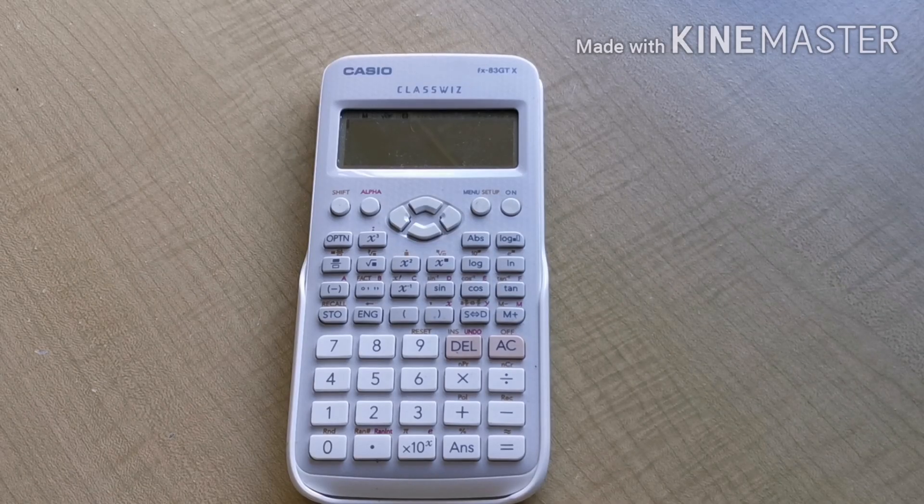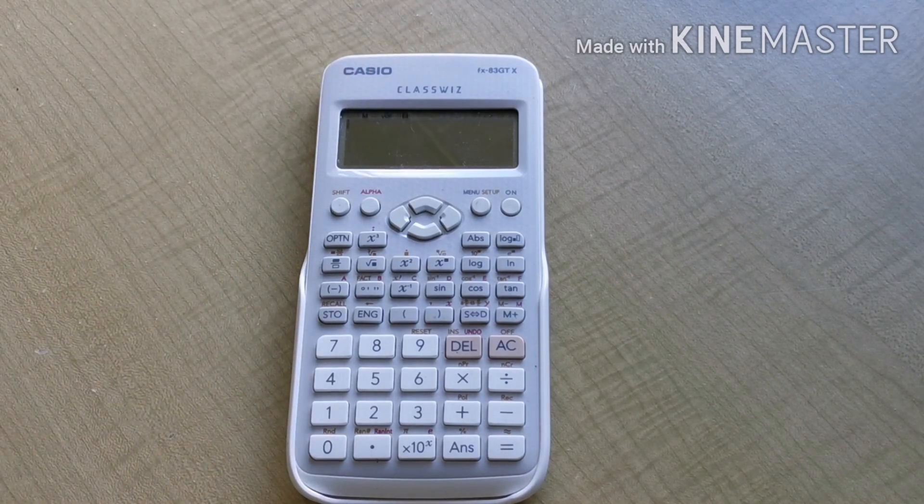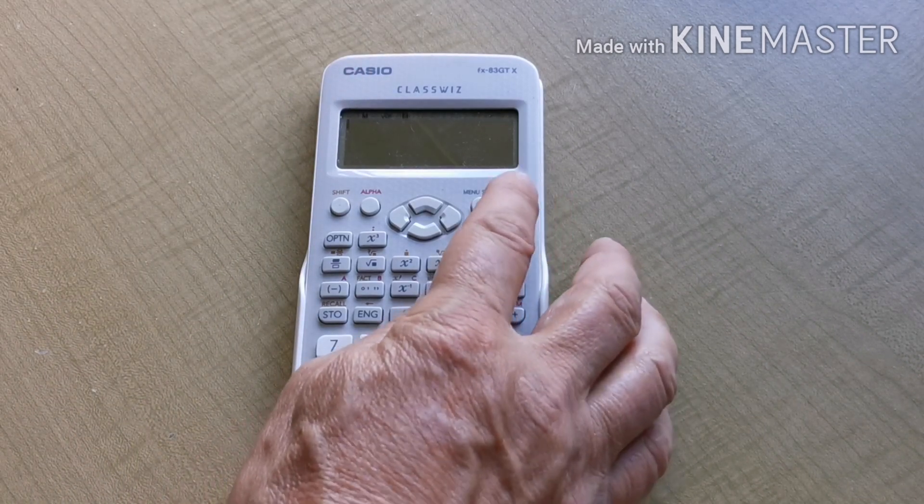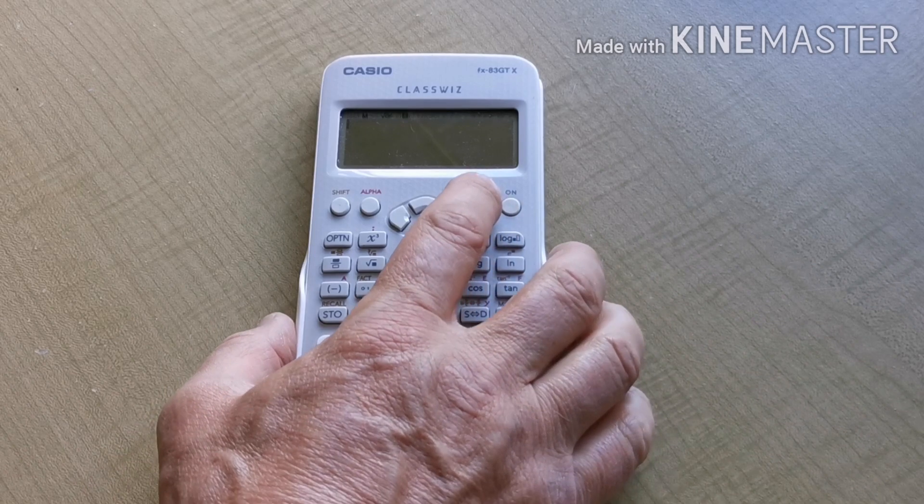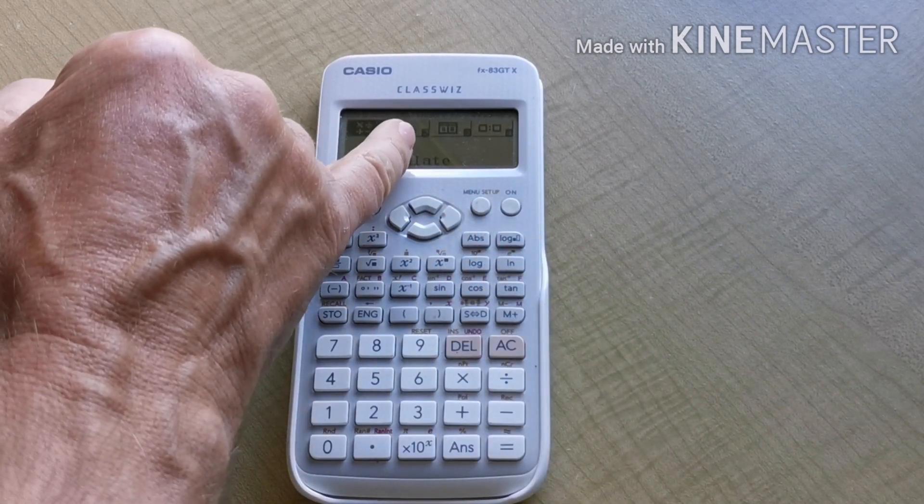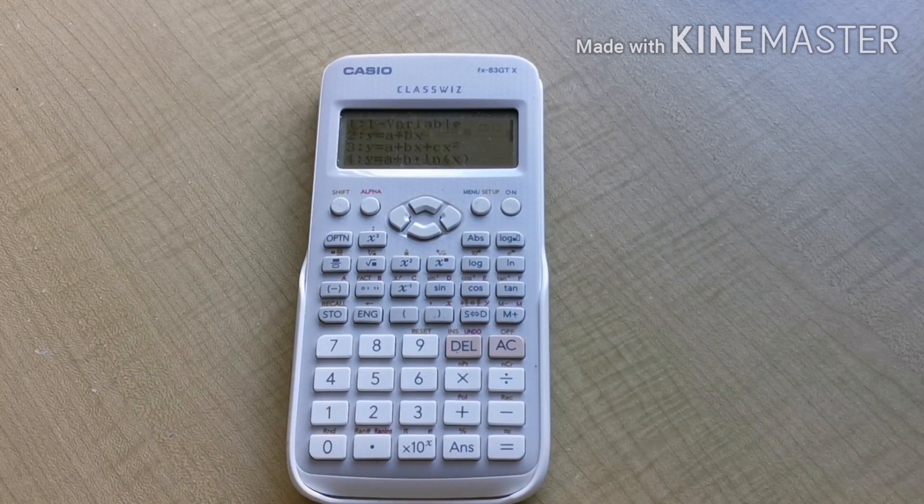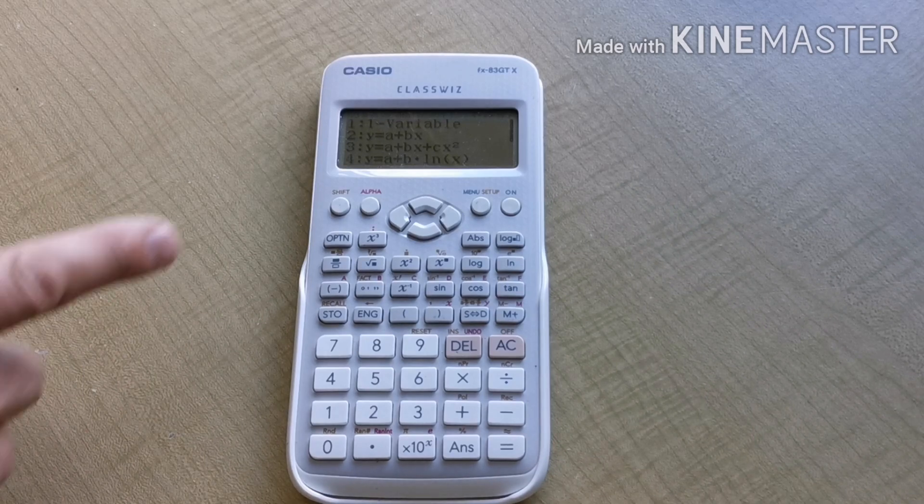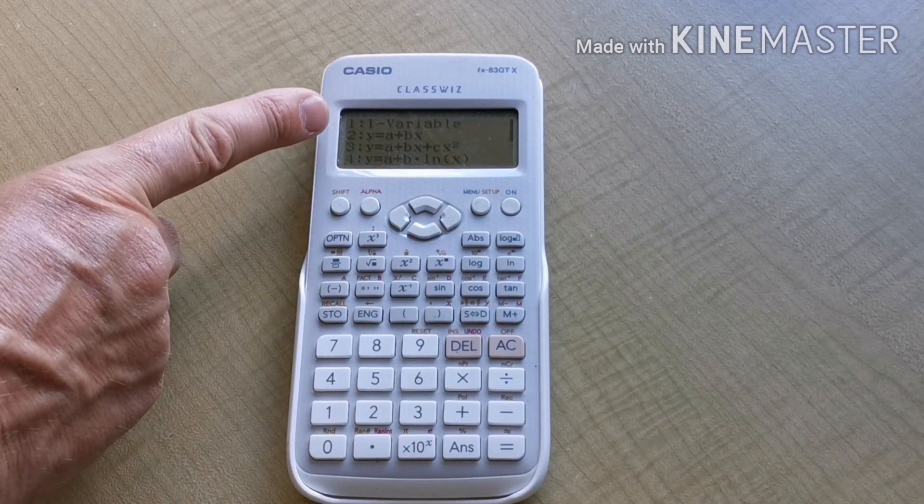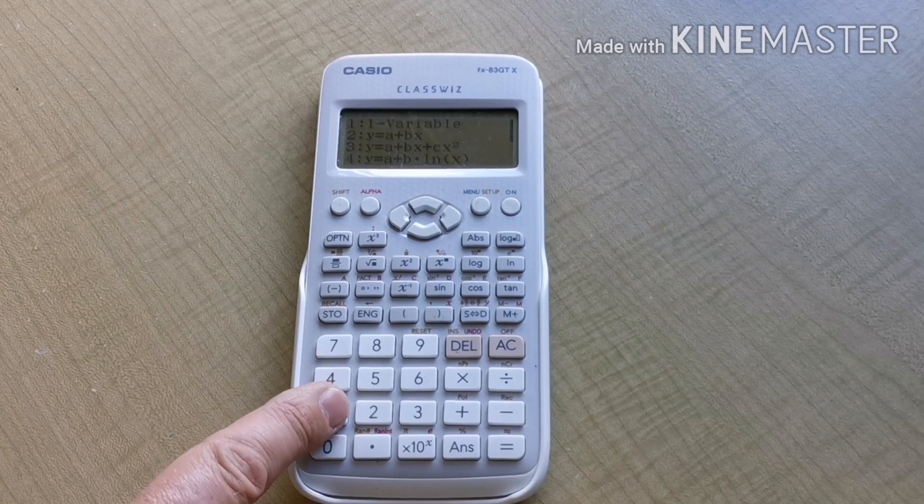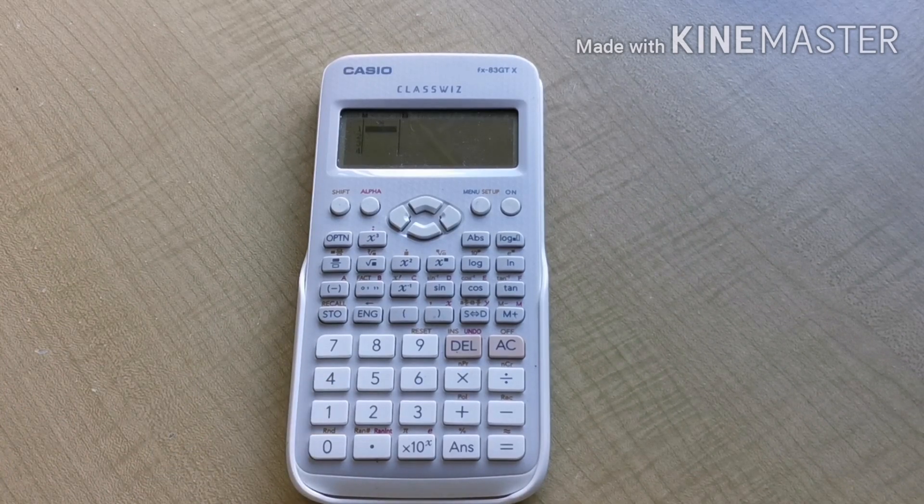Let's take a look at stat mode on this Casio FX83 GTX. When you turn the calculator on, first choose menu. Number 1 is calculate, number 2 is statistics. So press number 2. That gives a number of options. Number 1 is the option 1 variable. Choose that first option. Now we're ready to enter the data.